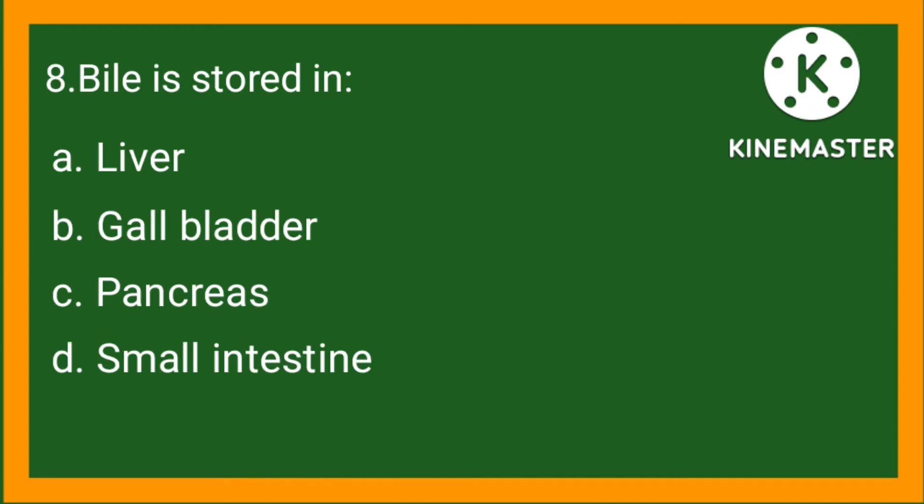Statement number 8. Bile is stored in: option A, liver; option B, gallbladder; option C, pancreas; option D, small intestine. So the right option is B, gallbladder.